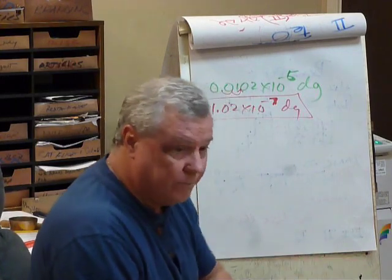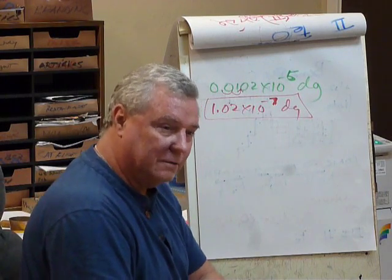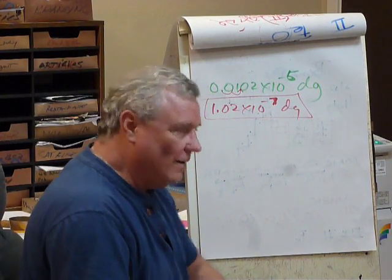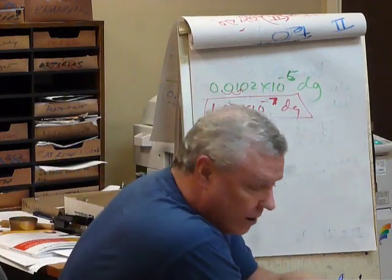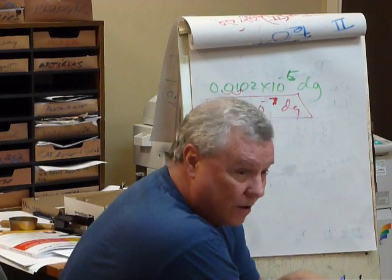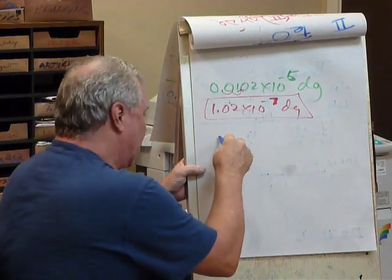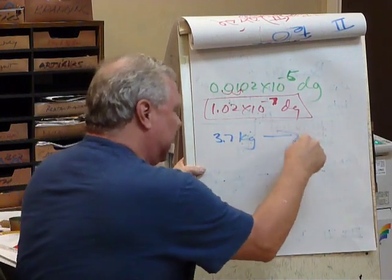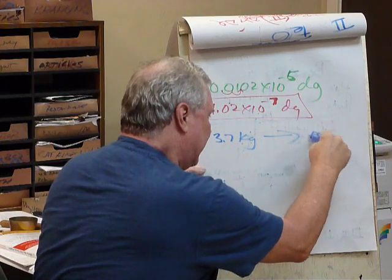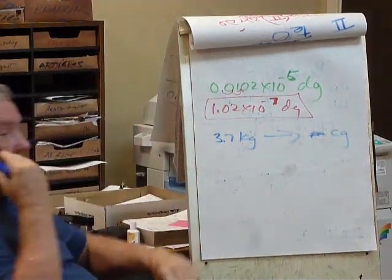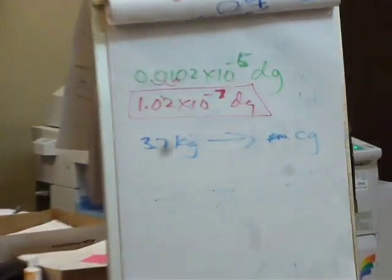Are you guys ready to do one of your own? I'm ready. Try this on your own. You've got 3.7 kilograms. And we want how many centigrams? So go from kilograms to centigrams.